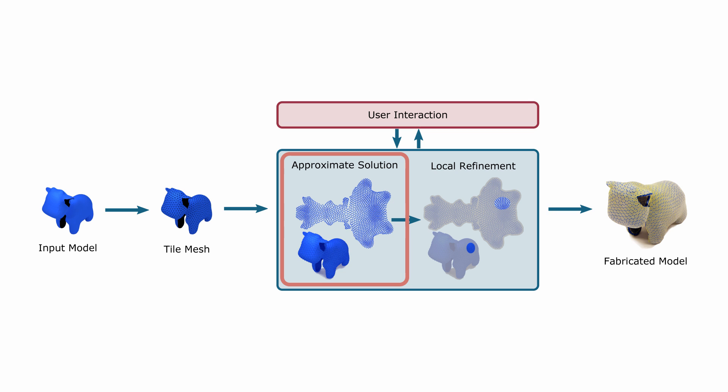First, we solve a coarse optimization using an approximation model that captures the main features of the design space. Then, we iteratively solve local optimization problems to refine the solution. Finally, we fabricate the obtained flat tile layout and attach the pre-stretched membranes to actuate the tiles into the 3D shape.